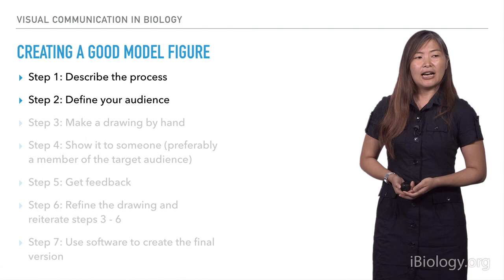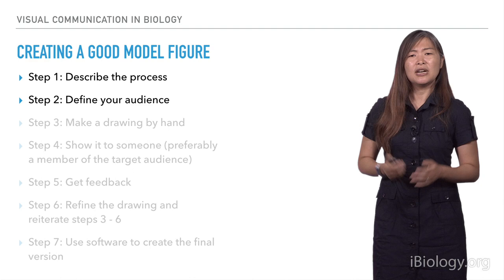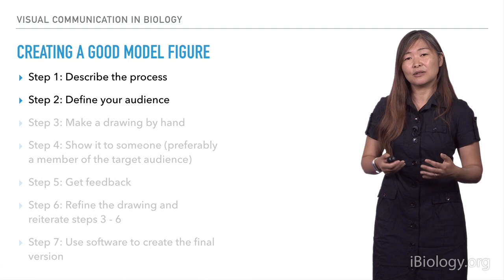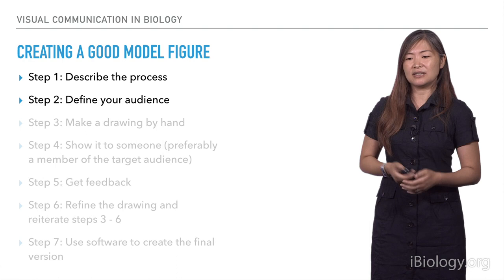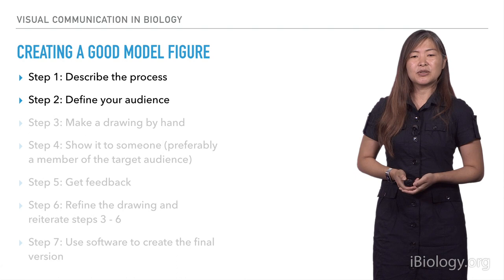Next, you really have to define your audience. Depending on maybe the journal you're submitting to, it might have a broader audience. It might get shown to students or members of the public. Depending on your audience, you may have to consider what background information to include in that illustration, as well as what context to provide. For example, what part of the cell or the body is this molecular process occurring in? That kind of information could all be included in a visual way.